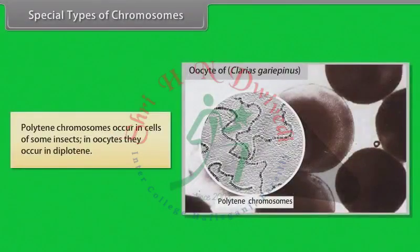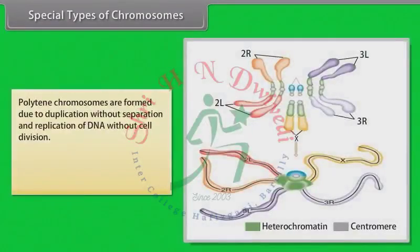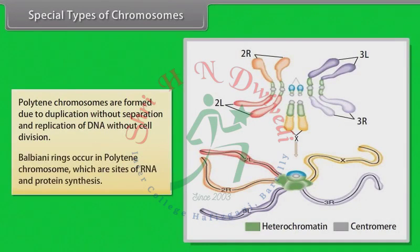Polytene chromosomes occur in cells of some insects, and in oocytes they occur in diplotene. Polytene chromosomes are formed due to duplication without separation and replication of DNA without cell division. Balbiani rings occur in polytene chromosomes, which are sites of RNA and protein synthesis.